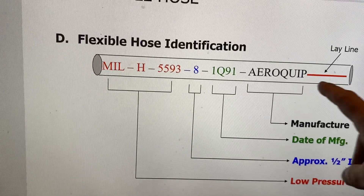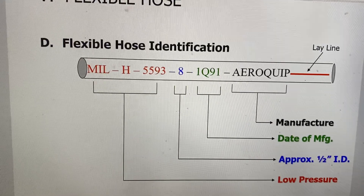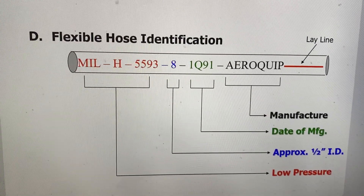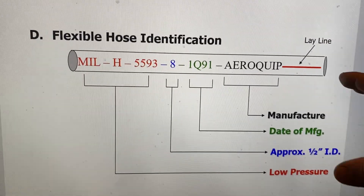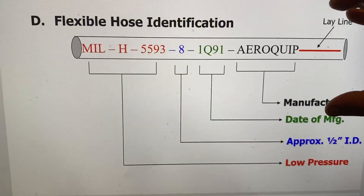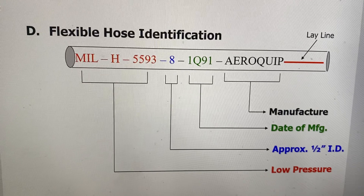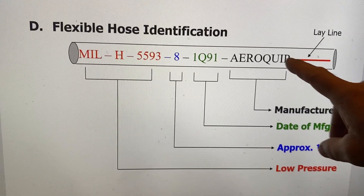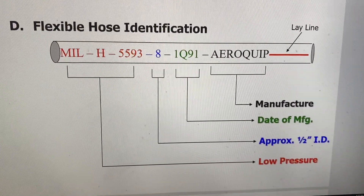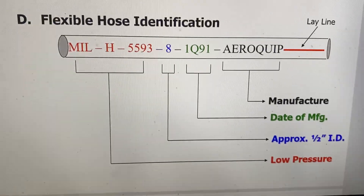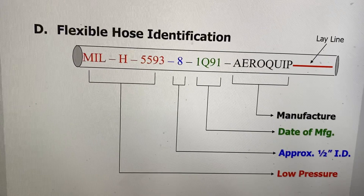Most hoses will have what's called a lay line — either red, yellow, purple, or some type of line running the length of the hose. The lay line tells us if the hose is twisted. When you install a flexible line and tighten the B-nut down, sometimes the line can twist. If it does, the lay line will wrap around the hose, letting you know it's twisted. The fix is easy — loosen the B-nut, let the hose straighten out, and retighten it. A twisted hose under pressure could potentially fail.